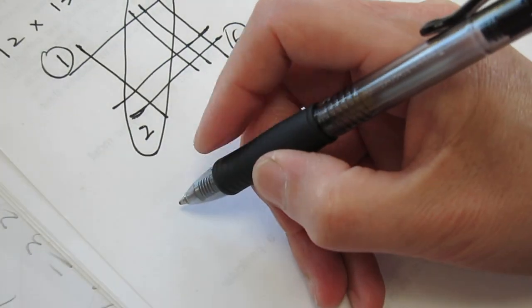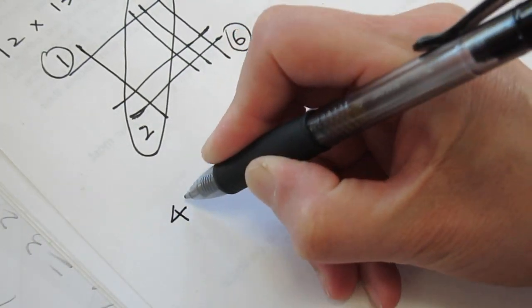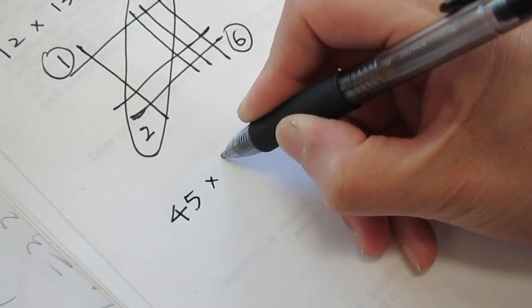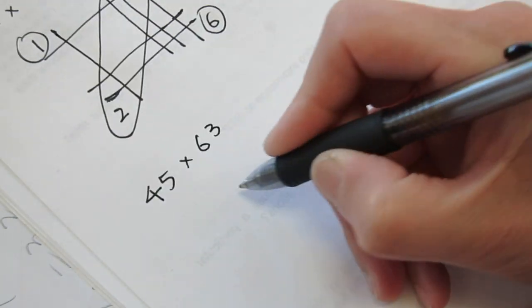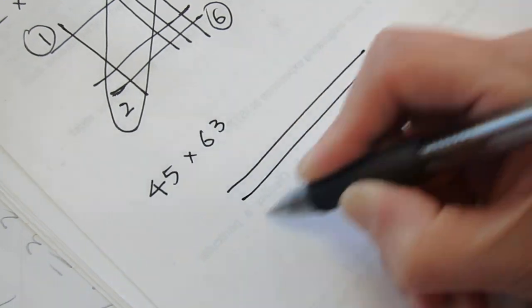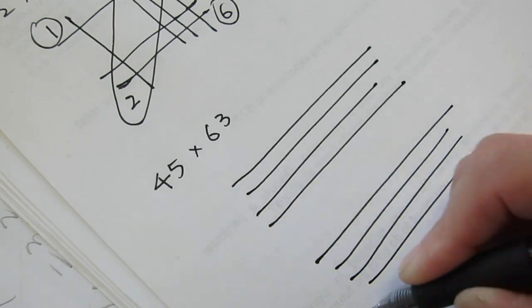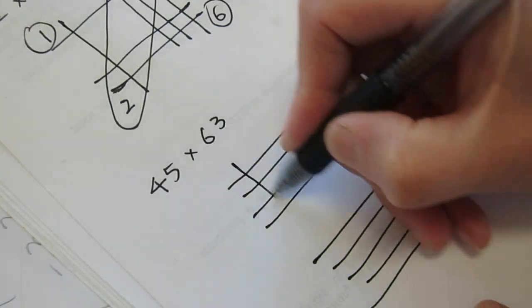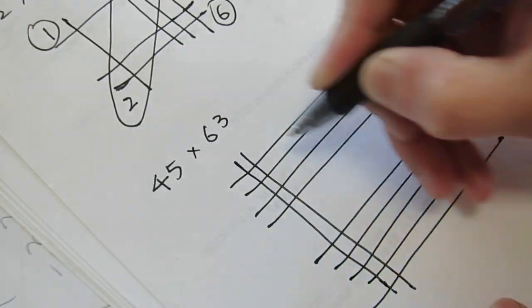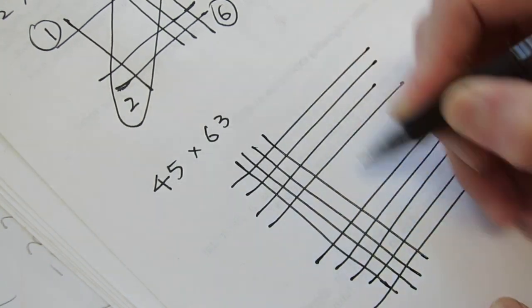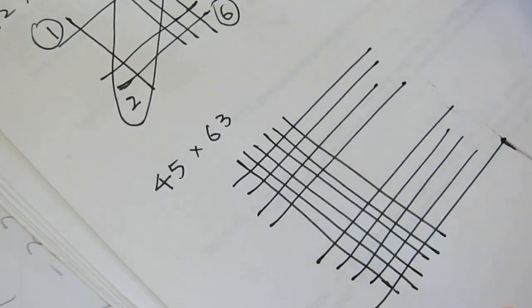Make sense? So this one we make it a little bit bigger. 45 times 63, so 1, 2, 3, 4, 45. 3, 4, 5, 60. 1, 2, 3, 4, 5, 6, 3.